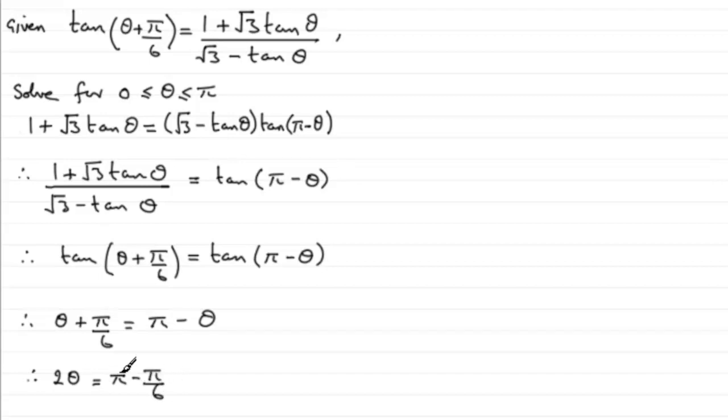So what does this leave me with? Well, pi is 6 sixths pi, take away another sixth pi, it's 5 sixths pi.